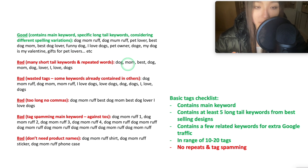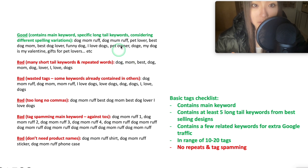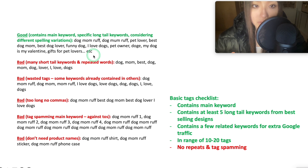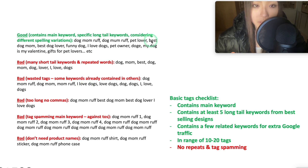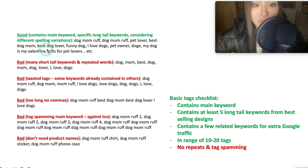Your design will still show up if someone searches just 'dog,' but it will rank very far down because it's not an exact match. It's all about relevancy — that's how Redbubble ranks products. Also, if you've already used 'best dog lover' as a tag, you don't need 'dog lover' again separately, since it's already contained in that phrase. But you can have 'best dog mom' and 'best dog lover' as two separate tags since they are entirely different long-tail keywords.